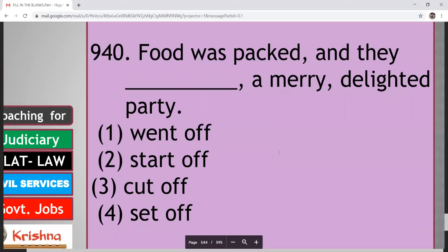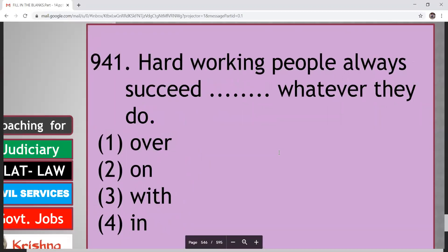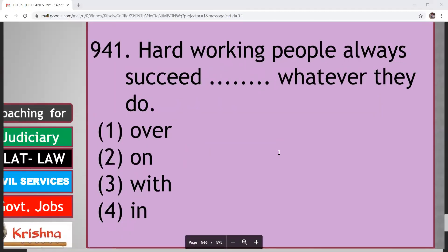Food was spanned and they dashed a very delighted party. Went off, start off, cut off, set off. So here it is set off. That is fourth option. Journey begin. That is fourth option. Next. Hard working people always succeed in whatever they do. Over, on, with, in. So here it is in. Hard working people always succeed in whatever they do.